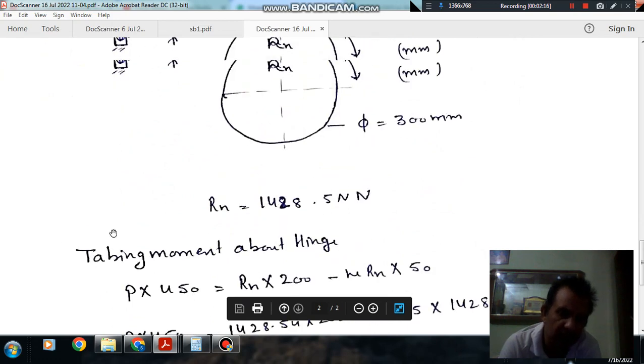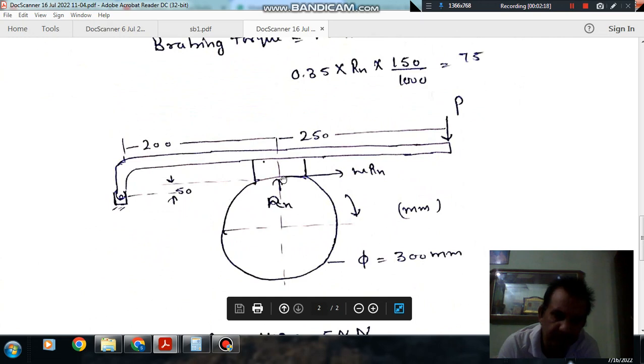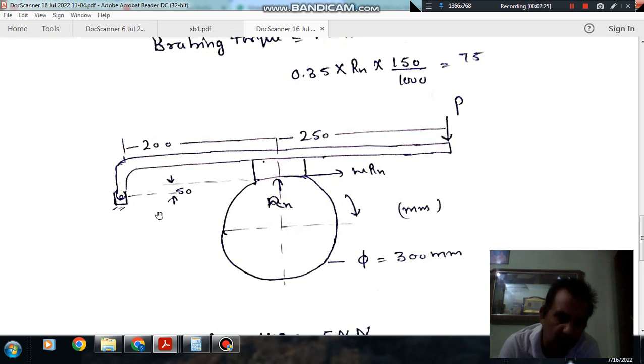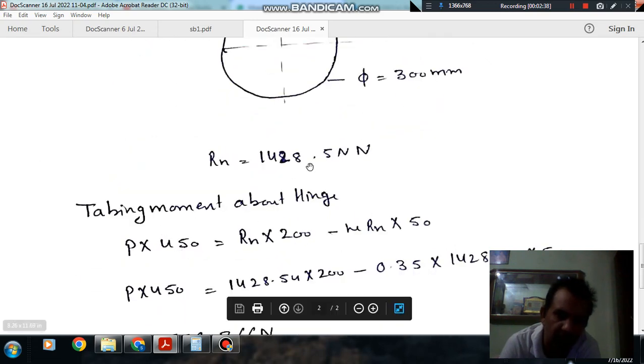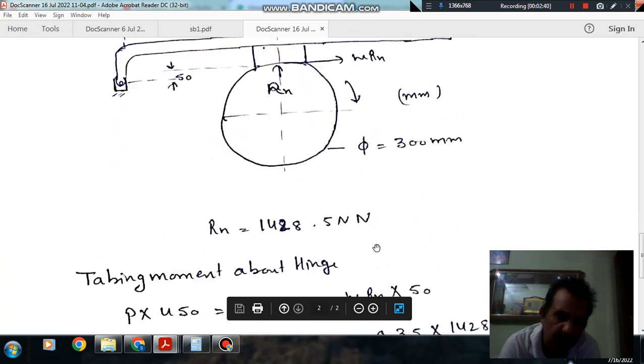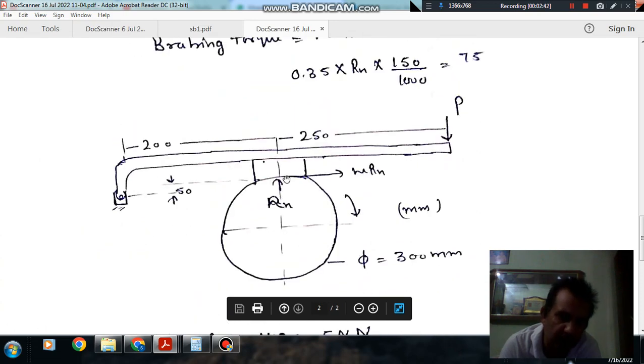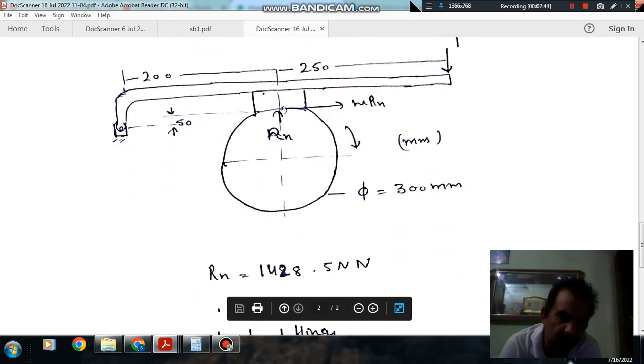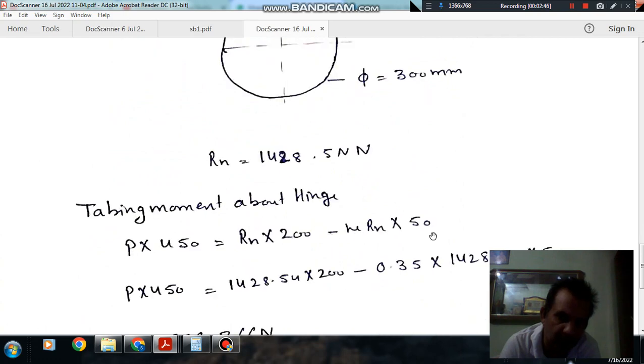Now we have Rn. Taking moment about the hinge point: P × 450 minus Rn × 200 plus μRn × 50 equals zero. Or we can say P × 450 equals Rn × 200 minus μRn × 50.